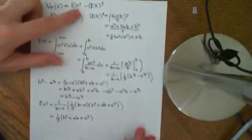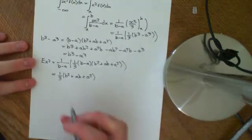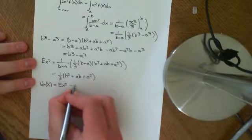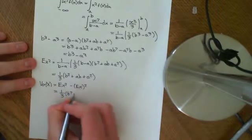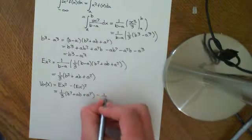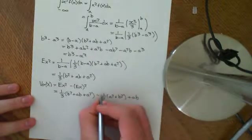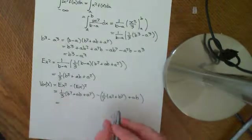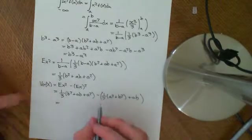Now subtracting (E[X])² from E[X²], the variance of X equals (B² + AB + A²)/3 minus (A² + 2AB + B²)/4. Combining these terms, the AB terms and squared terms partially cancel. There appears to be some difficulty resolving the final simplified form here.